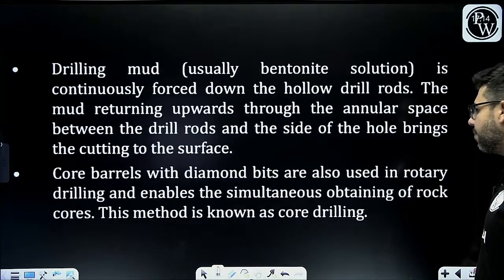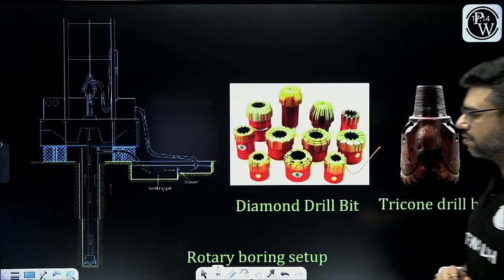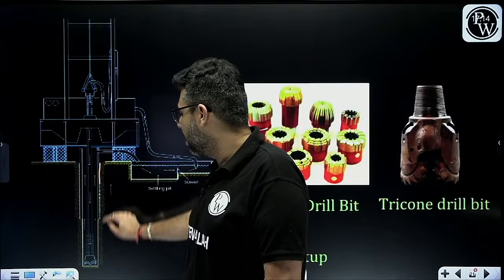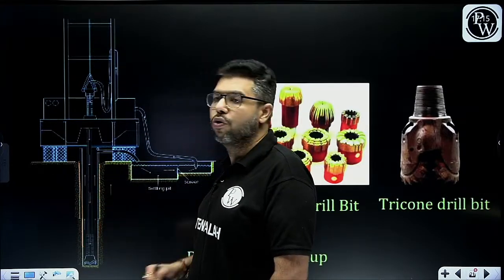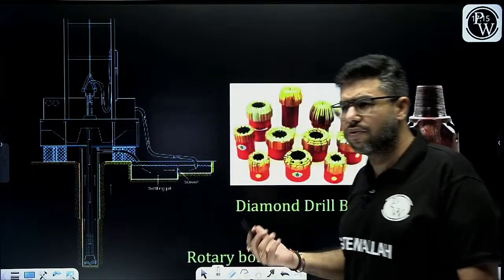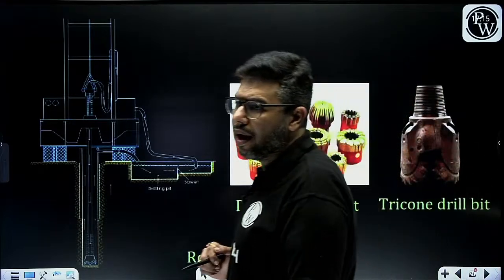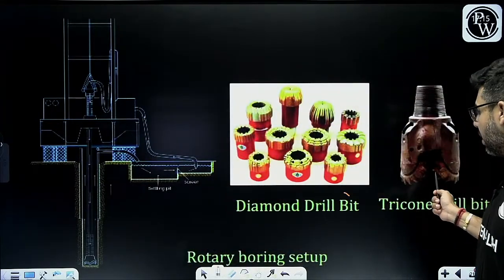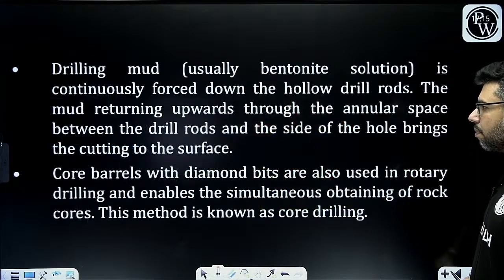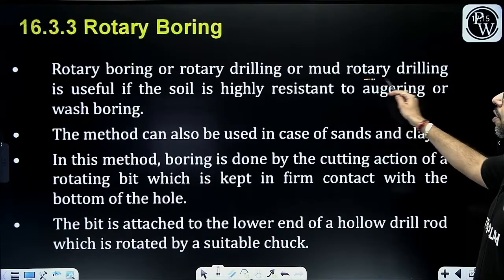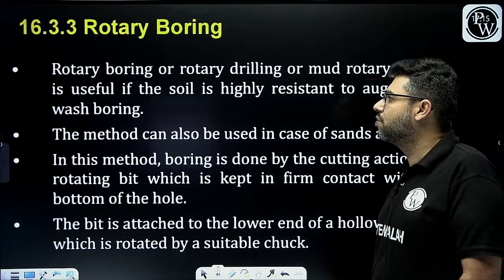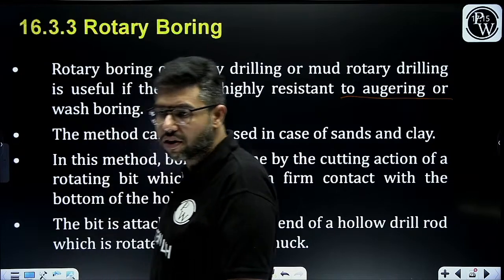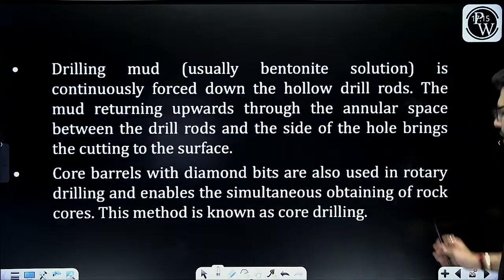In rotary boring, we have drill bits that directly cut the soil as they go down, making a borehole. No water is used. For soft soils, a casing may be needed to stabilize the borehole, whereas for rocks no casing is required. Rotary boring gives disturbed samples but can be used for rocks also. It is used when the soil is highly resistant to augering or wash boring - where those methods cannot be used, rotary boring can be applied.